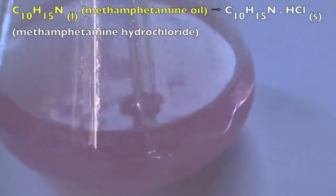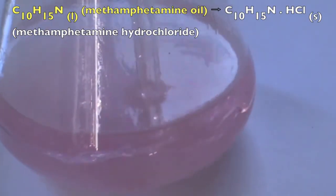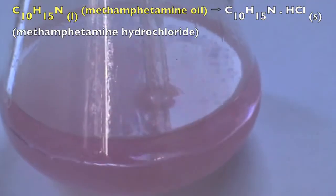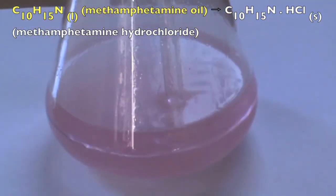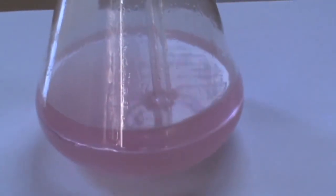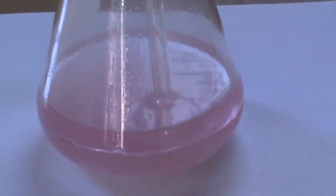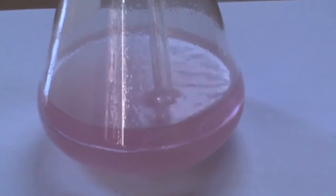There is a white precipitate on the bottom of the flask, this is indicative of the conversion of the methamphetamine oil being fully converted into the hydrochloride salt. Furthermore, there is two layers that is formed in the mixture.